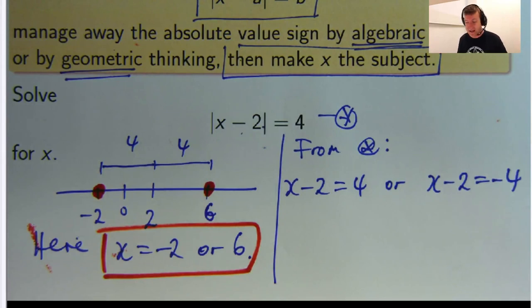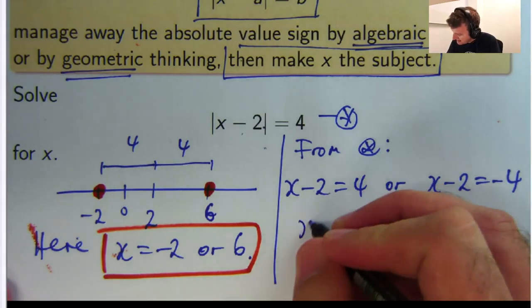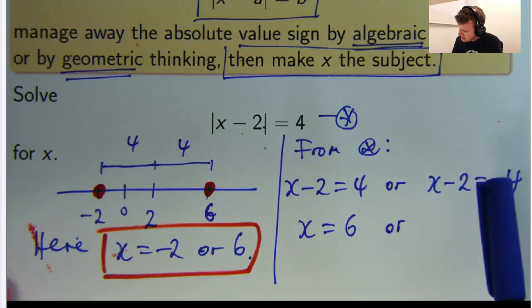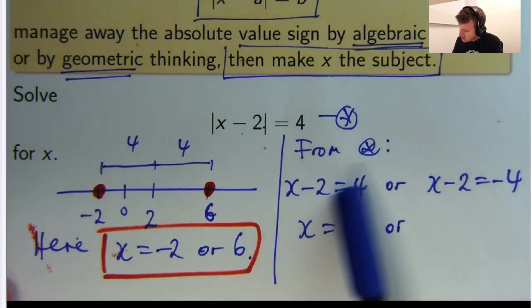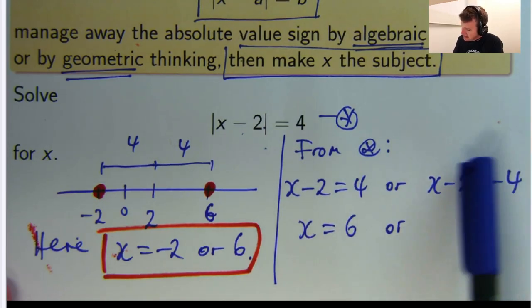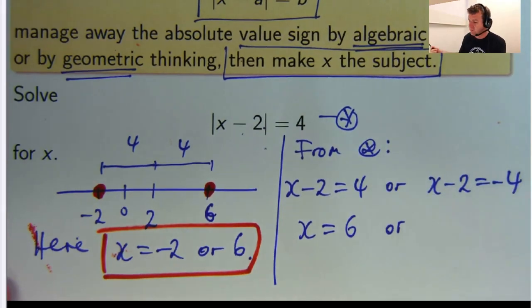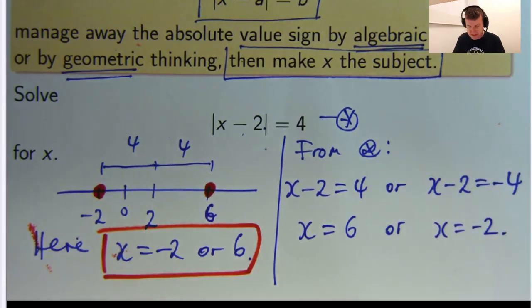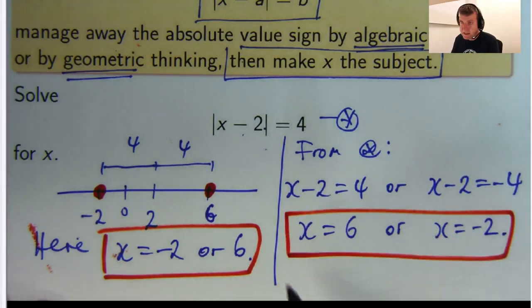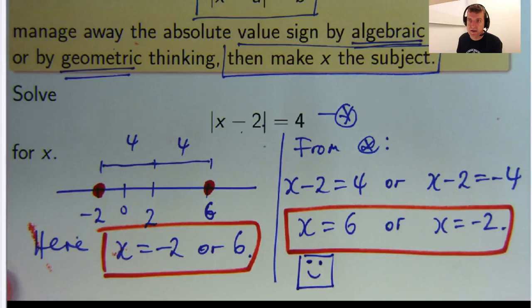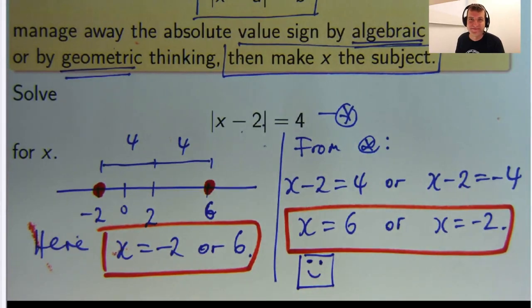And hopefully they agree with this thing down here. So if I add two to both sides, I get x equals 6. And if I add two to both sides there, that will disappear. And that will go to negative 4 plus 2, which is negative 2. So you can see these things are the same. So we are super happy about that.